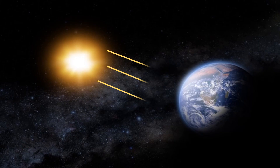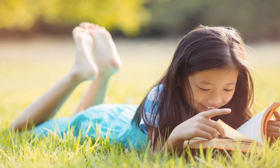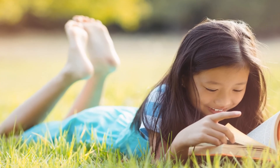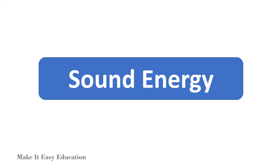Light energy. Light is a form of energy that can travel through space. The light from the sun allows us to see everything. Plants use light from the sun to make food.